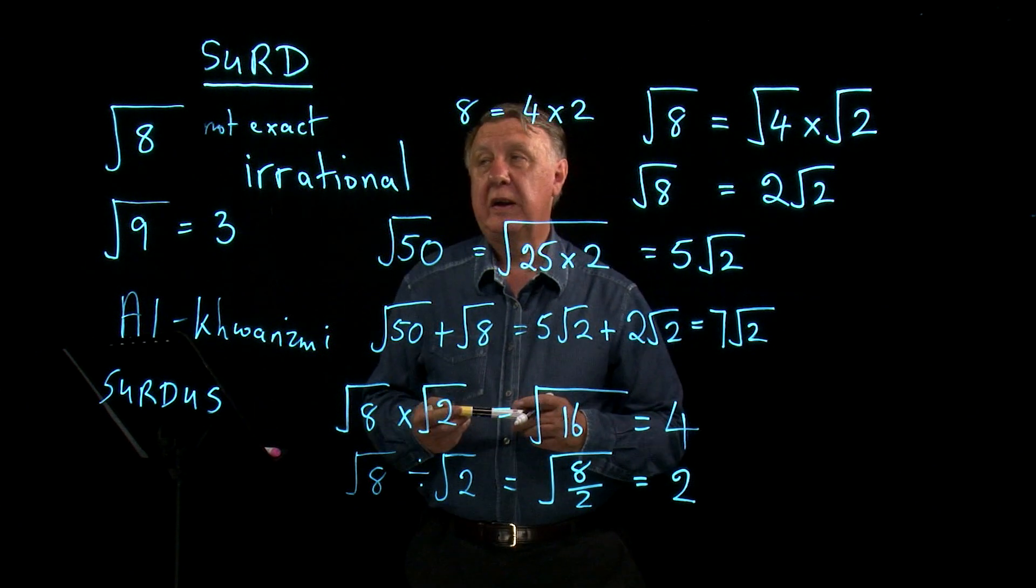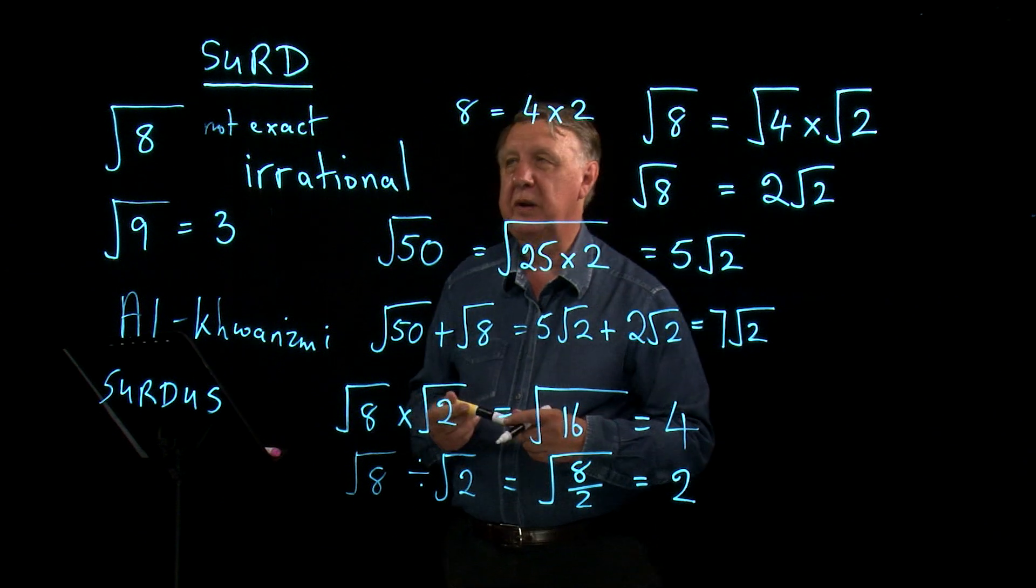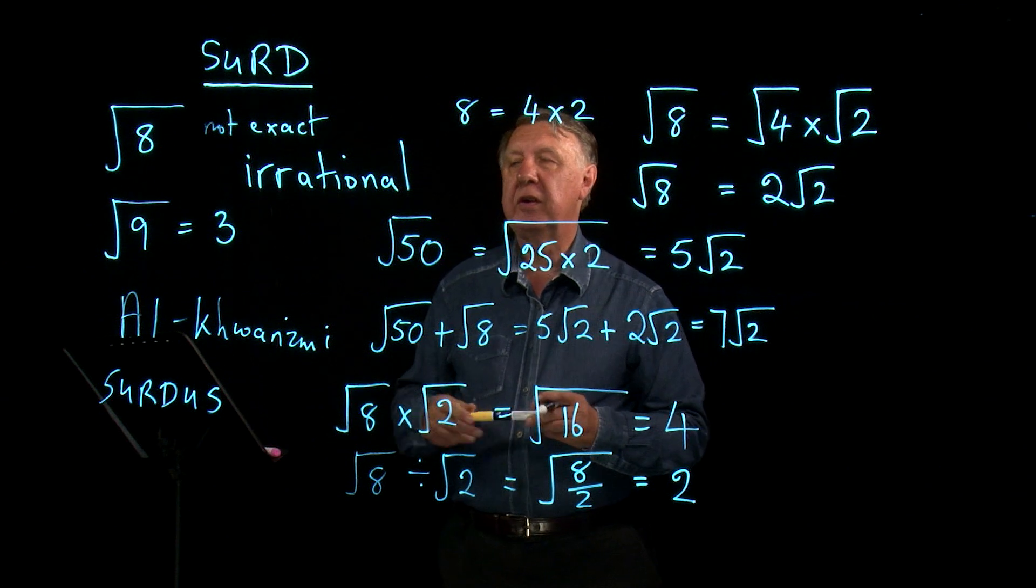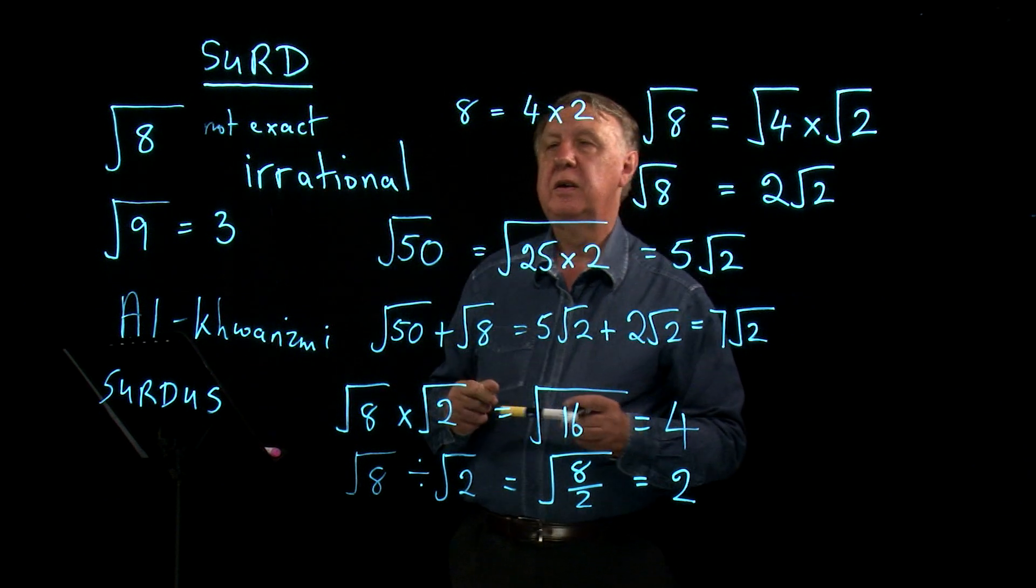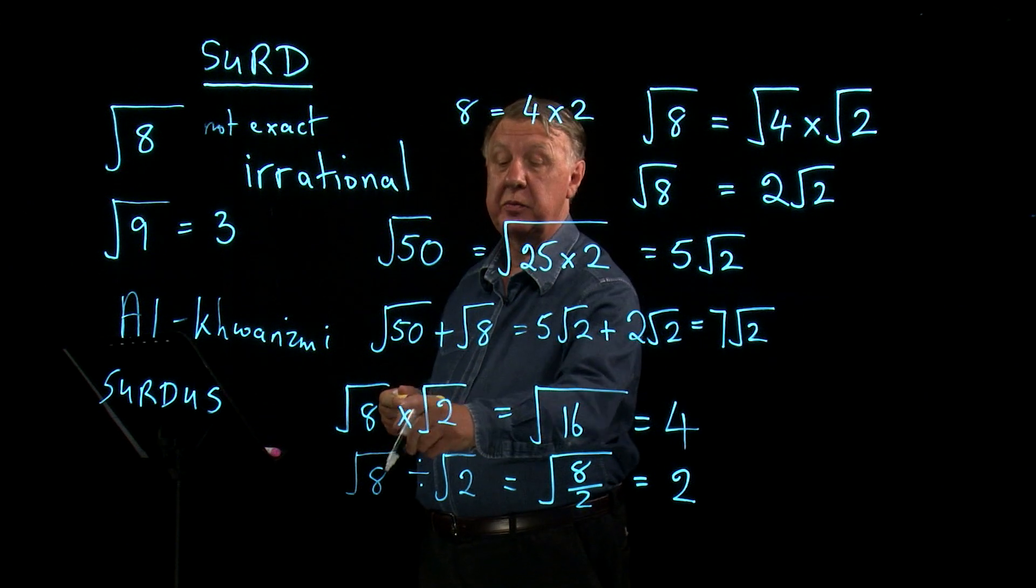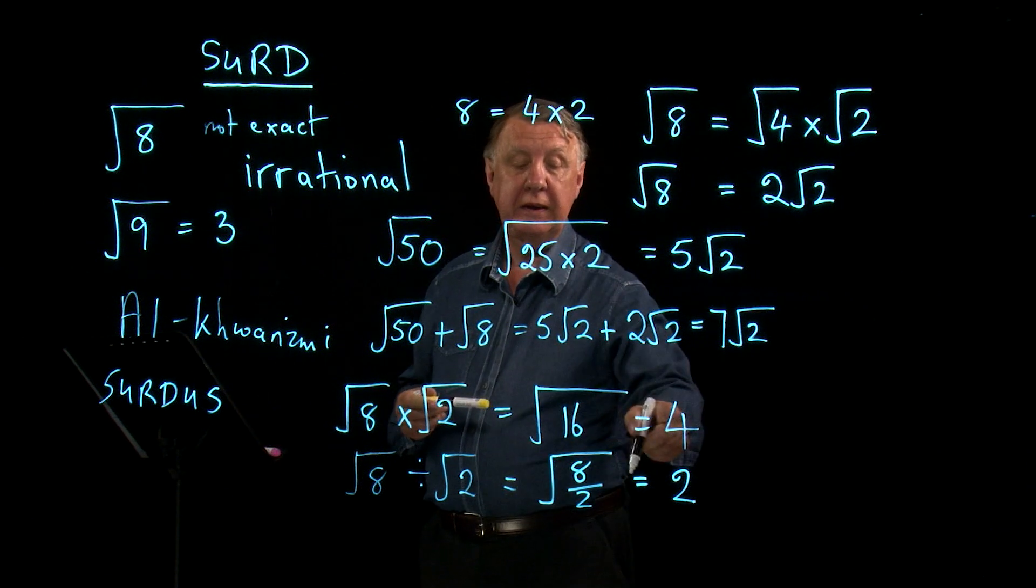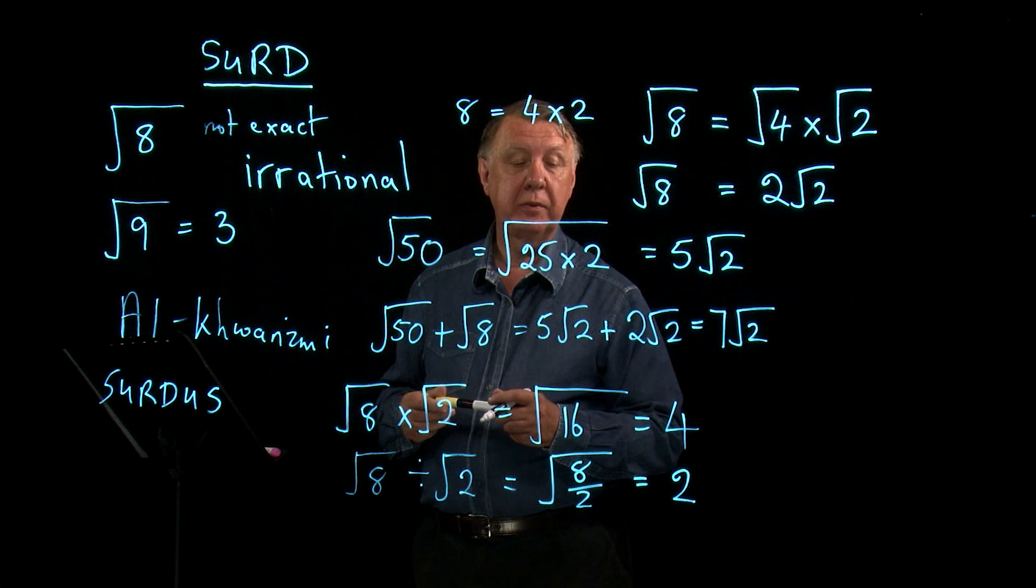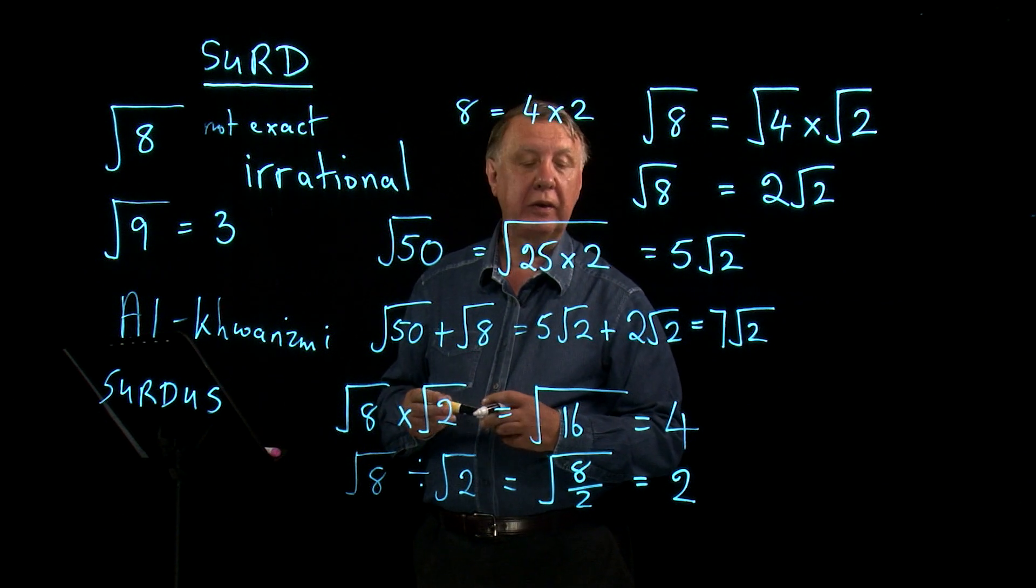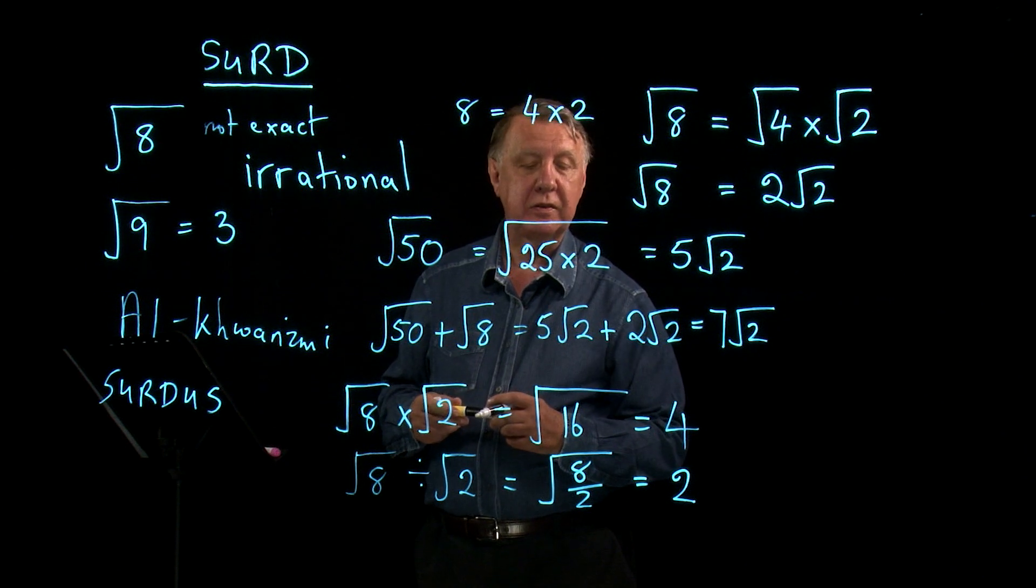So really we're left at this point with a big question, aren't we? What really are these surds? What really are irrational numbers so that if I multiply two of them together, I can get an exact answer. And if I divide two of them, I can also get an exact answer.